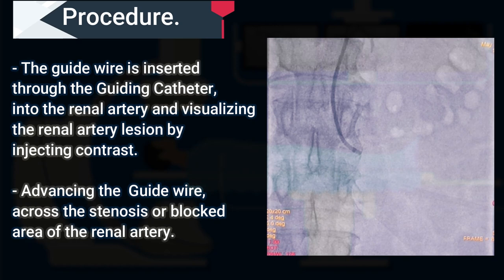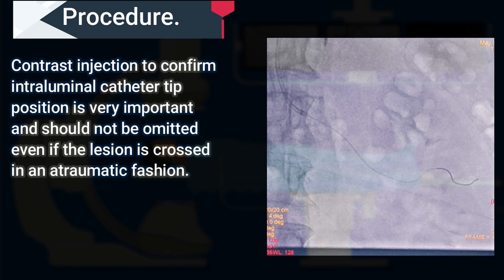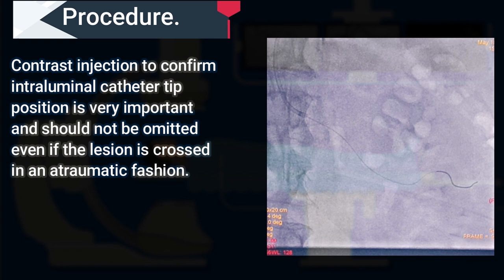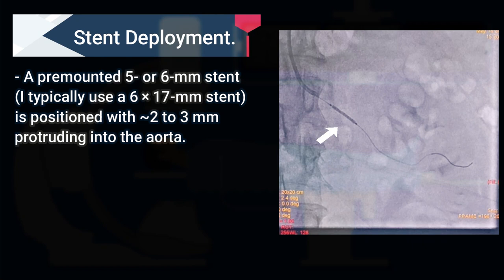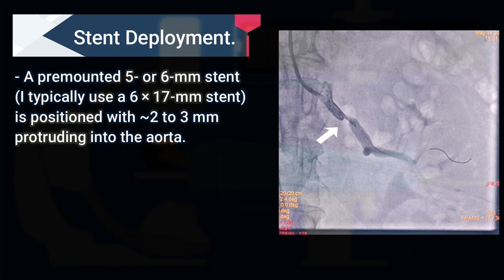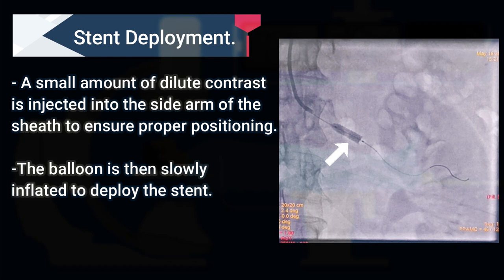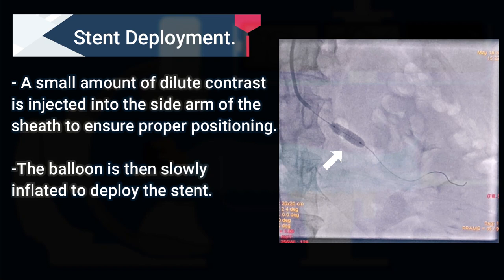Contrast is injected to confirm intraluminal catheter tip position. This is very important and should not be omitted even if the lesion is crossed in an atraumatic fashion. After crossing the lesion, the pre-mounted 5 mm or 6 mm stent is positioned with 2 to 3 mm protruding into the aorta. After positioning the stent, a small amount of diluted contrast is injected into the guiding catheter to ensure proper positioning.